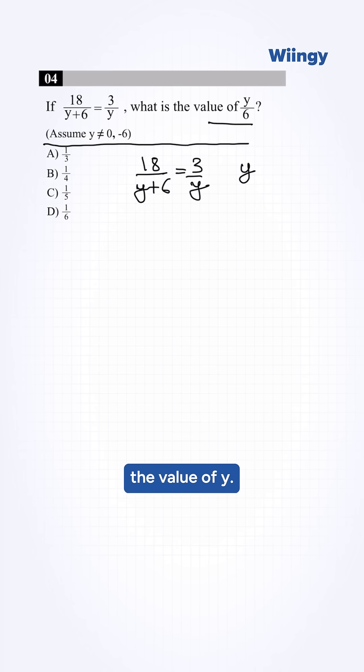We cross multiply this. This will become 18y is equal to 3 into y plus 6.